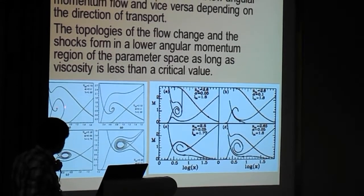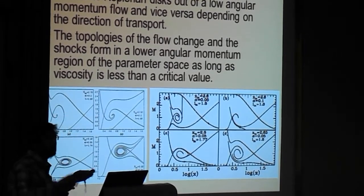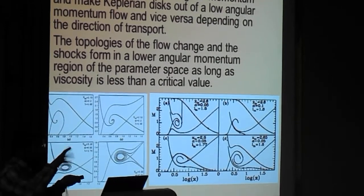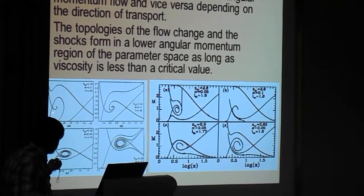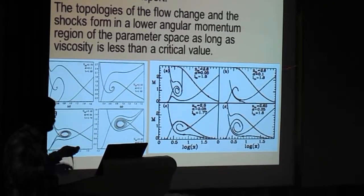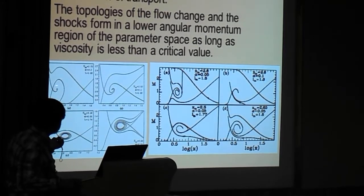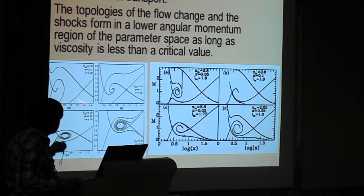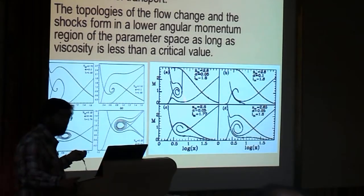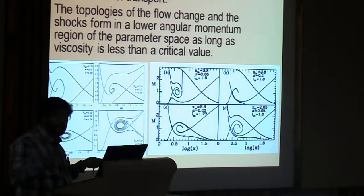You can see that the O type sonic point, becomes spiral, just like damped harmonic oscillator, the phase space, becomes like a damped harmonic oscillator phase space. Because, even if the high viscosity, damps faster, low viscosity, damps slower. So, this topology changed, and of course, you can still have a shock, provided the viscosity is not high enough.